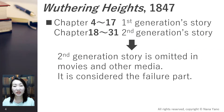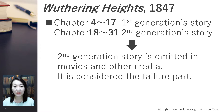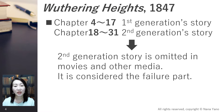Wuthering Heights is written in almost equal amounts of first and second generation. Mr. Earnshaw picks up an unidentified homeless child and decides to name him Heathcliff and raise him. His own son, Hindley, hates Heathcliff, and after Mr. Earnshaw's death, takes Heathcliff as his servant and breaks up his relationship with Catherine. Catherine loves Heathcliff but marries Edgar to follow her brother's wishes.